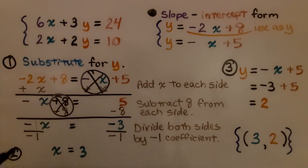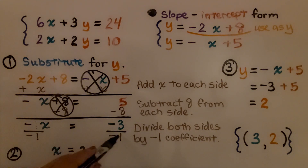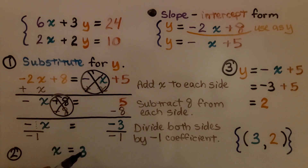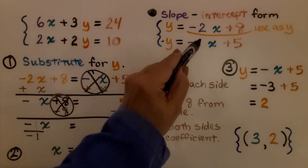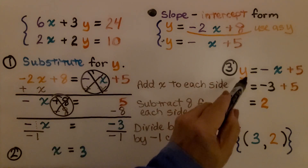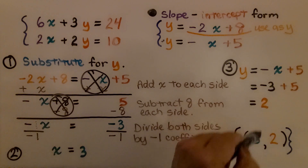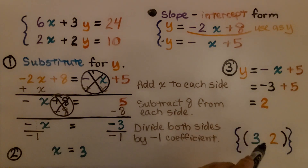We divide both sides by the negative 1 coefficient. We divide each side by negative 1. Remember your rules for division with integers: two negatives make a positive, so we get positive x equals positive 3. We found x equals 3. We plug it into one of the equations — I plugged into this equation. So instead of negative x, we have negative 3 because x is 3. Negative 3 plus 5 is positive 2, so y equals 2. That is our solution: 3 for x, 2 for y.